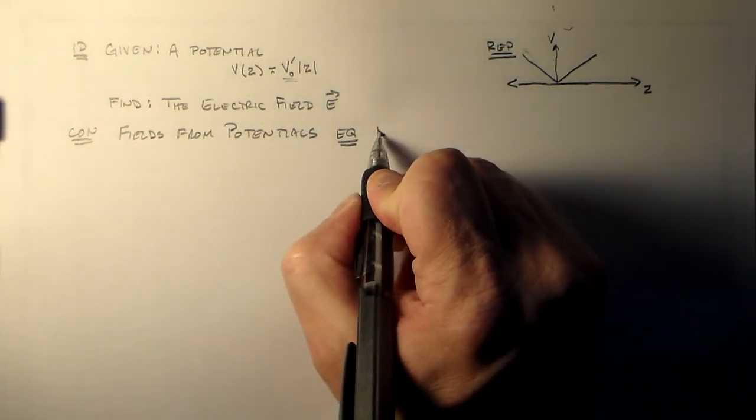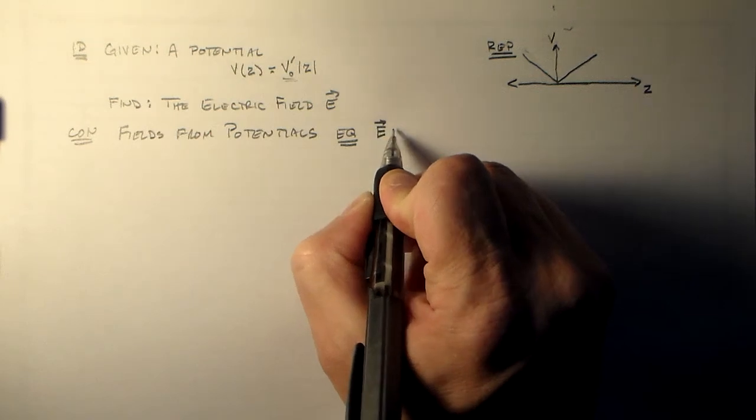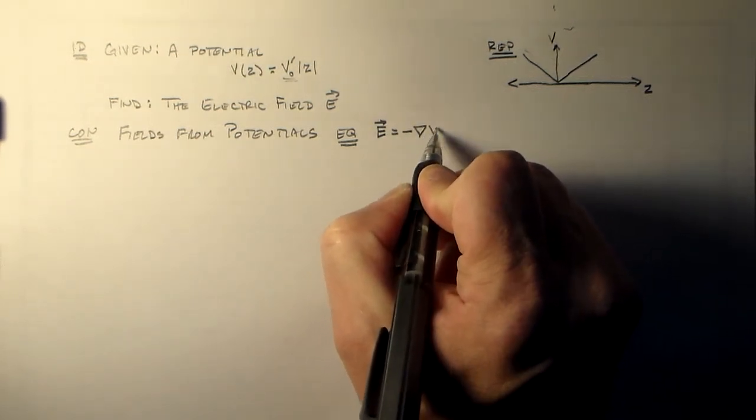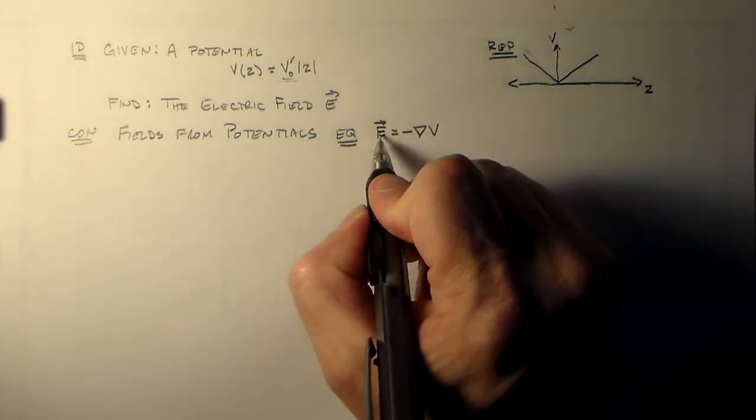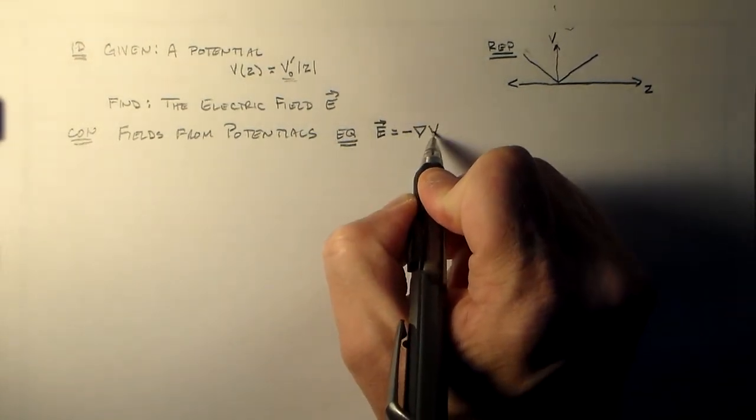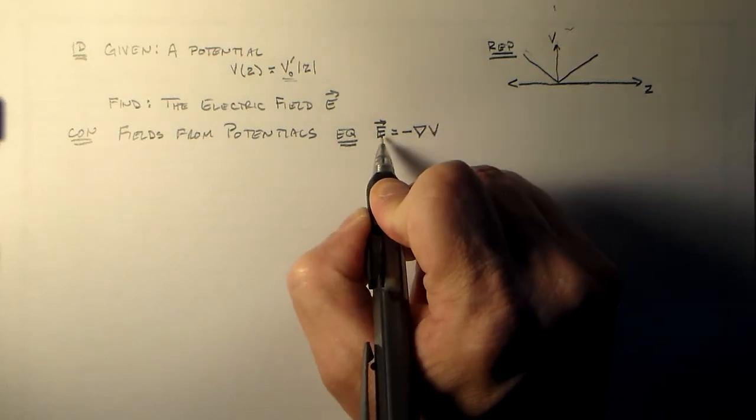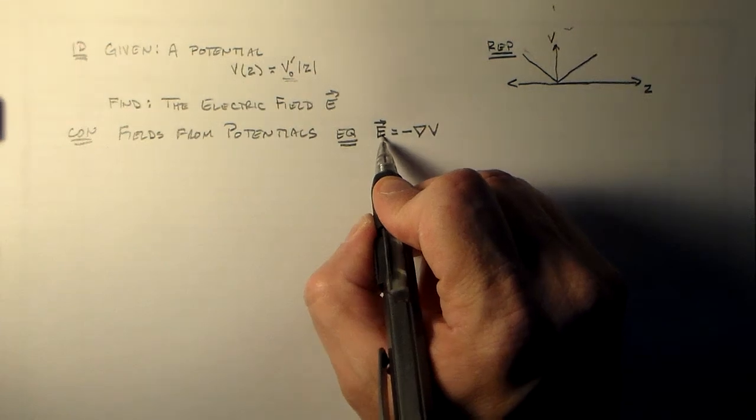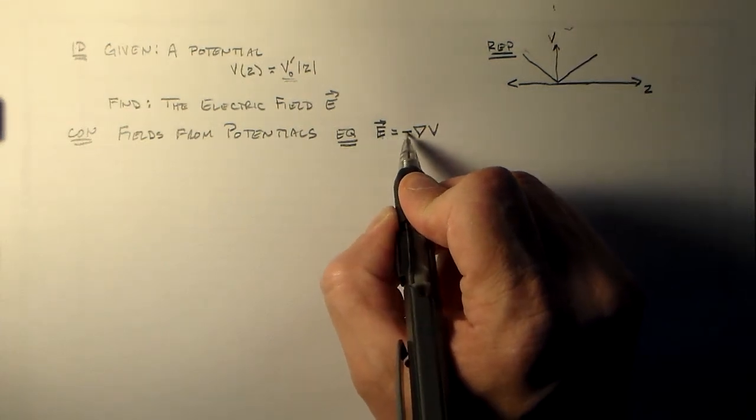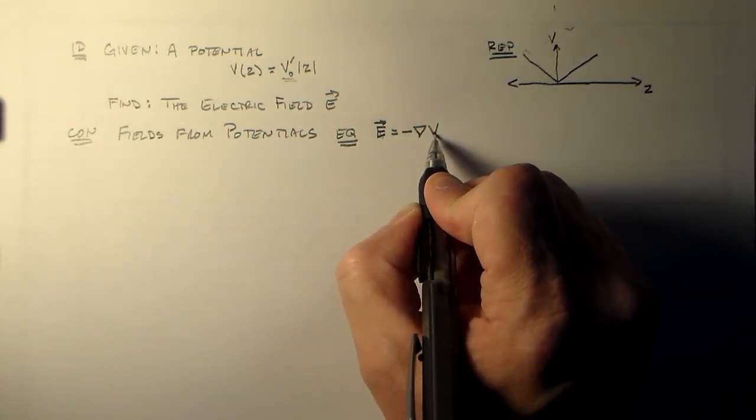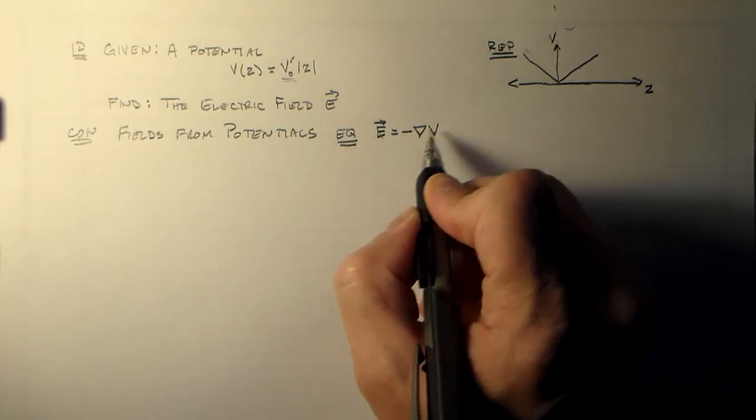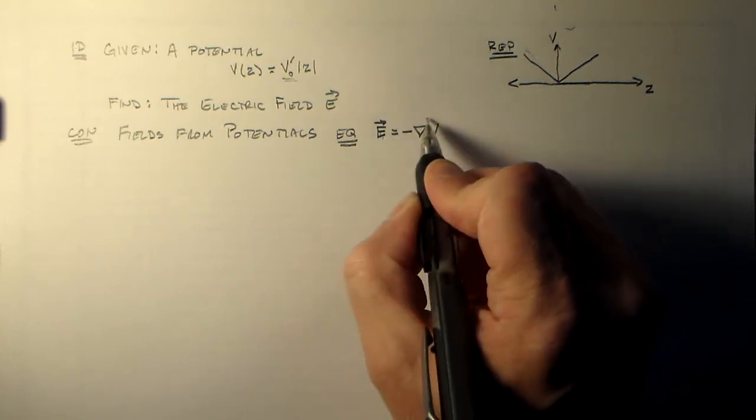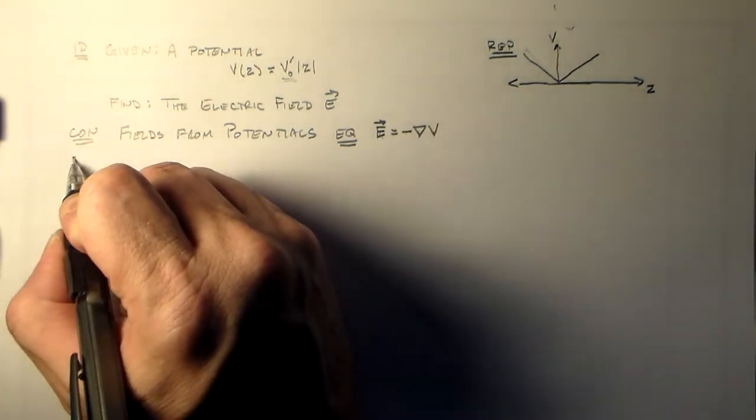So the equation that we do for that is the relationship between a field and a potential is E is equal to minus the gradient of the potential V. Right? Just like the force is equal to minus the gradient of the potential energy. The electric field, which is basically the force that would be at a point if a charge q was there, is equal to minus the gradient of the potential at that same point. So we have two fields. This is the relationship between a vector field and a scalar field.